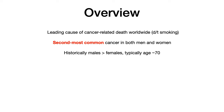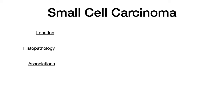Historically, lung cancers affected males more than females, typically around age 70. But this has changed somewhat in recent times. Let's go through and talk about these cancers one at a time. We'll start with small cell carcinoma. We're going to pay special attention to the location of the tumor, the histopathology that you need to memorize, and then all of those high-yield associations that will show up as buzzwords on exams.